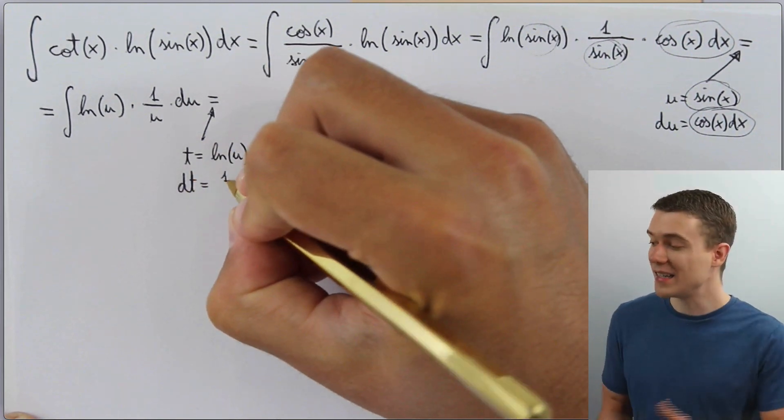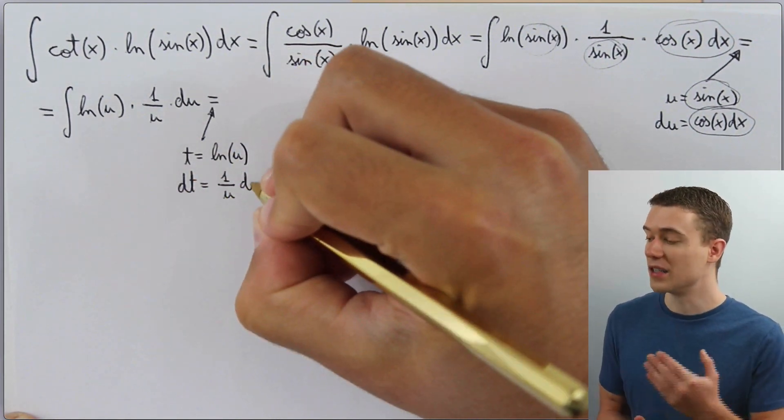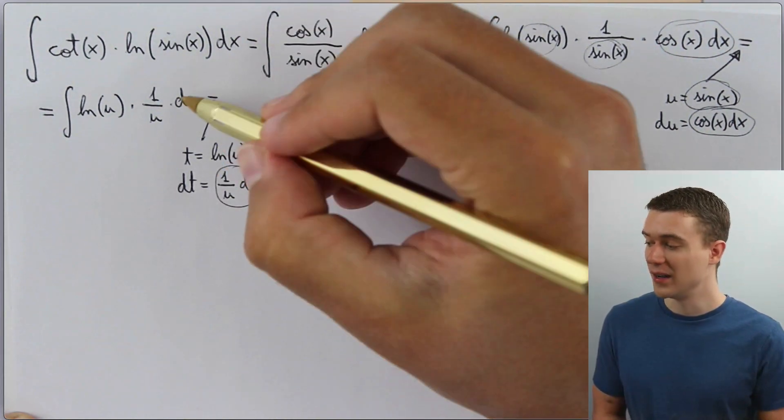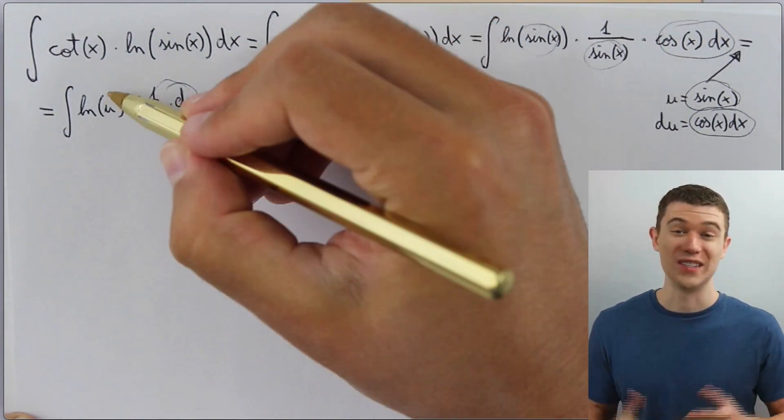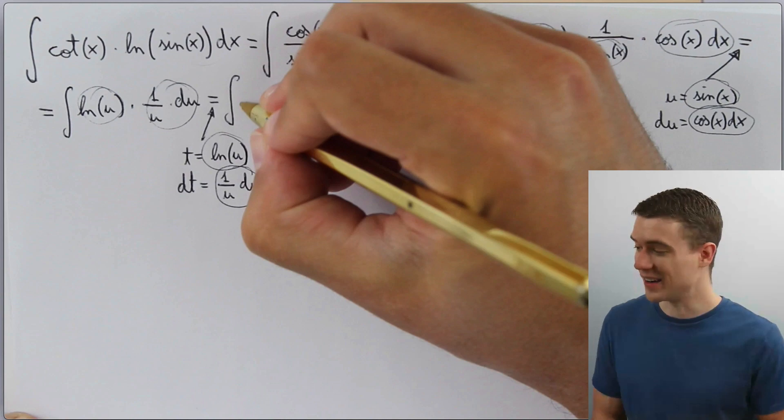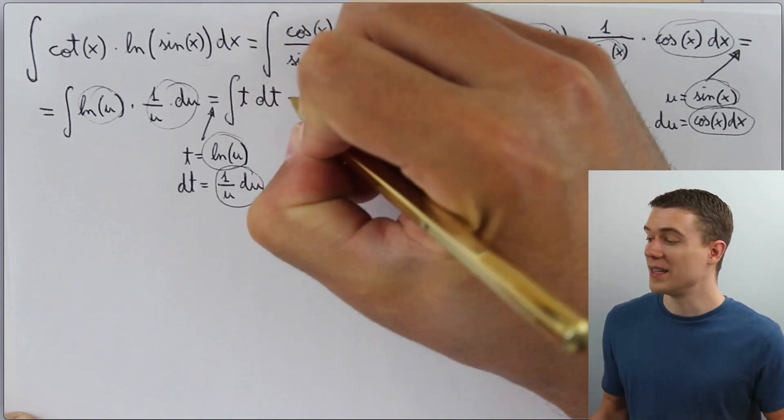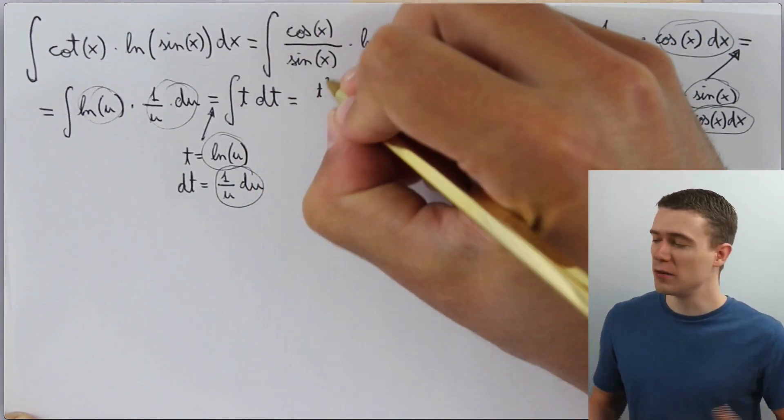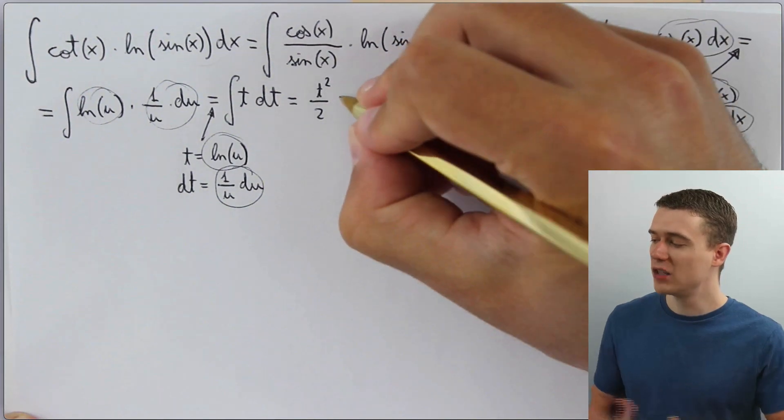Call it t. Let t be natural log u because the derivative of ln u is one over u, which just happens to be inside our integrand. And so this just becomes the integral of t. Add one to power, divide by the new power, t squared over two.